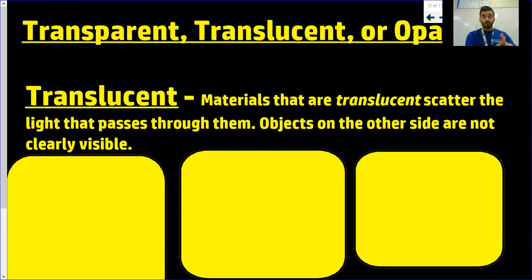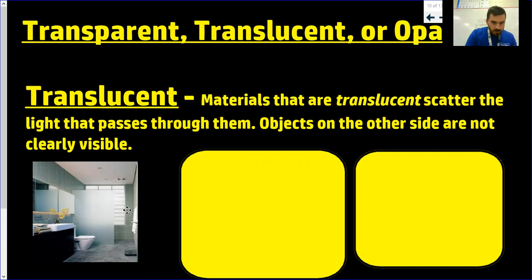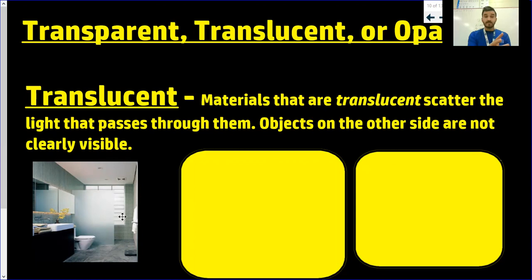With translucent, some examples are: if you look into this bathroom, they've got a little glass wall. Behind that glass wall they've got a shower head, and this glass is translucent because obviously you want some privacy in the bathroom. You can see through that door and see that something is there, but you can't clearly make it out. You can't see these lines through that translucent glass like you can on the other side. Light is going through, but anything behind that glass is not going to be clearly visible.